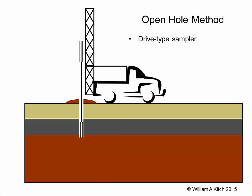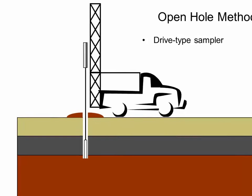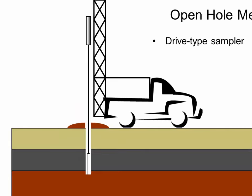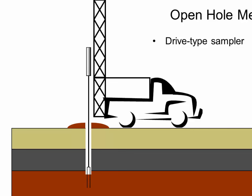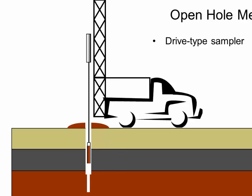When the soil is very stiff or dense, it is not possible to use a push type sampler. In these circumstances, we use a heavy wall sampler that can be driven into the soil using a drop hammer. The process is similar to retrieving a push type sampler, but uses different equipment and a different sampler.